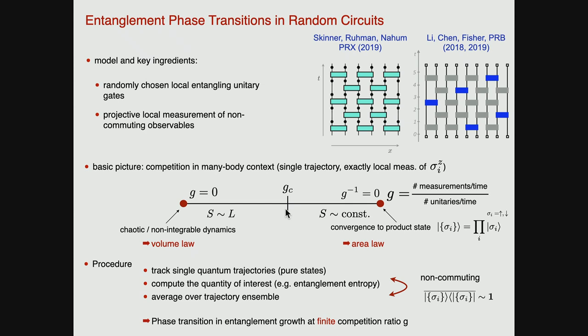What these works have really nicely shown is that at a critical coupling strength — alike in a quantum phase transition — there is a critical point at finite competition ratio, which interpolates in random circuits between a volume-law growth and an area-law growth of entanglement. Interestingly, it's not the trivial situation where the critical point is at zero (a little bit of measurement collapses everything into product states). So that's an interesting novel phase transition scenario showing up in the entanglement entropy growth.